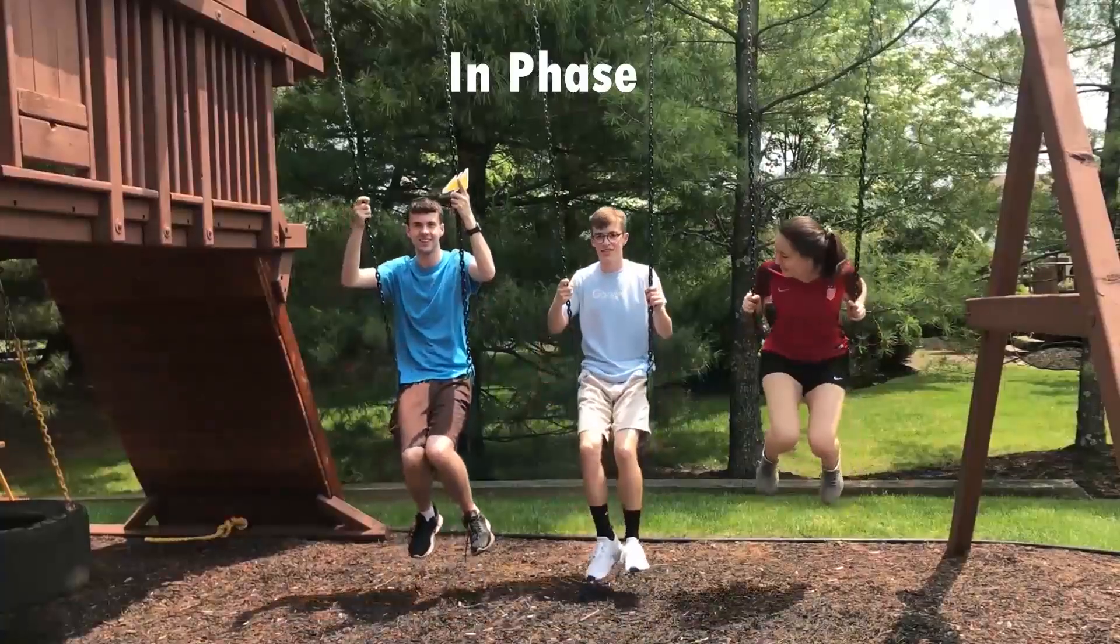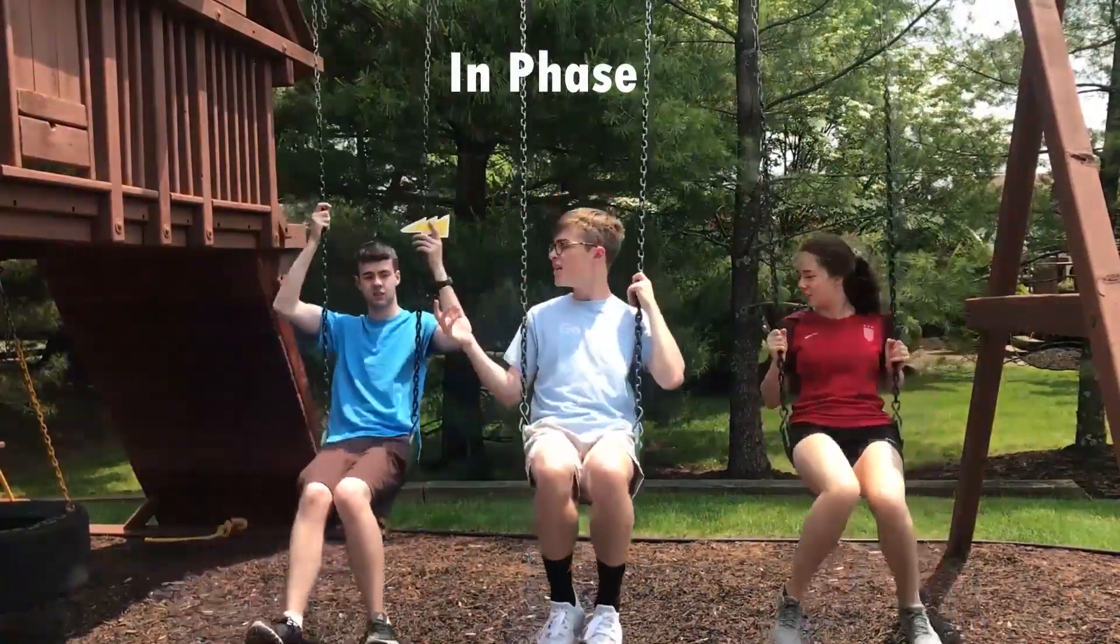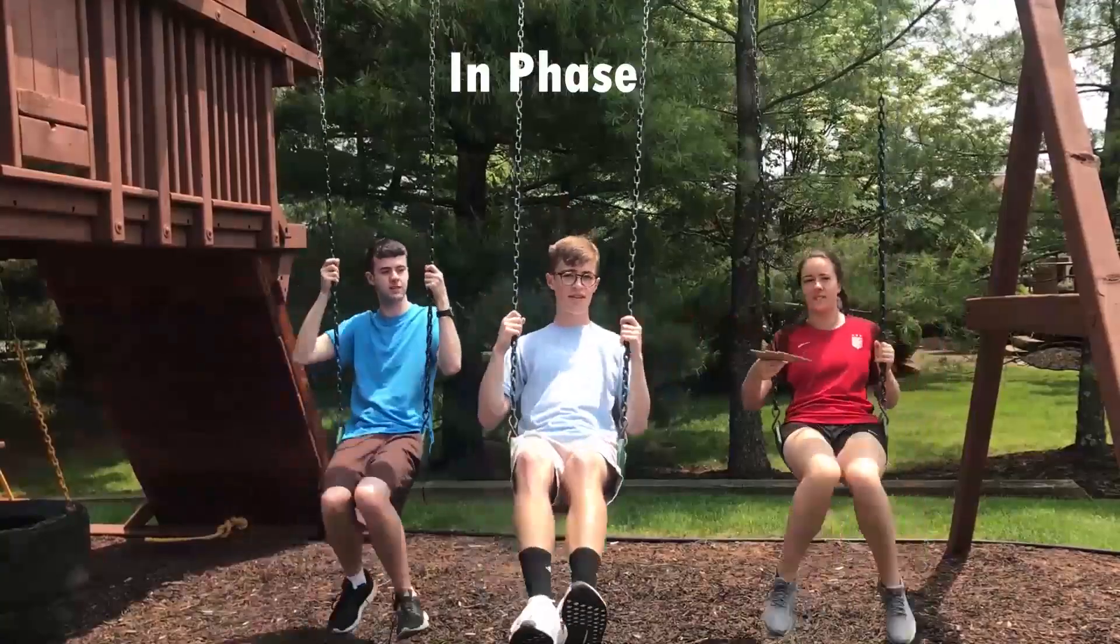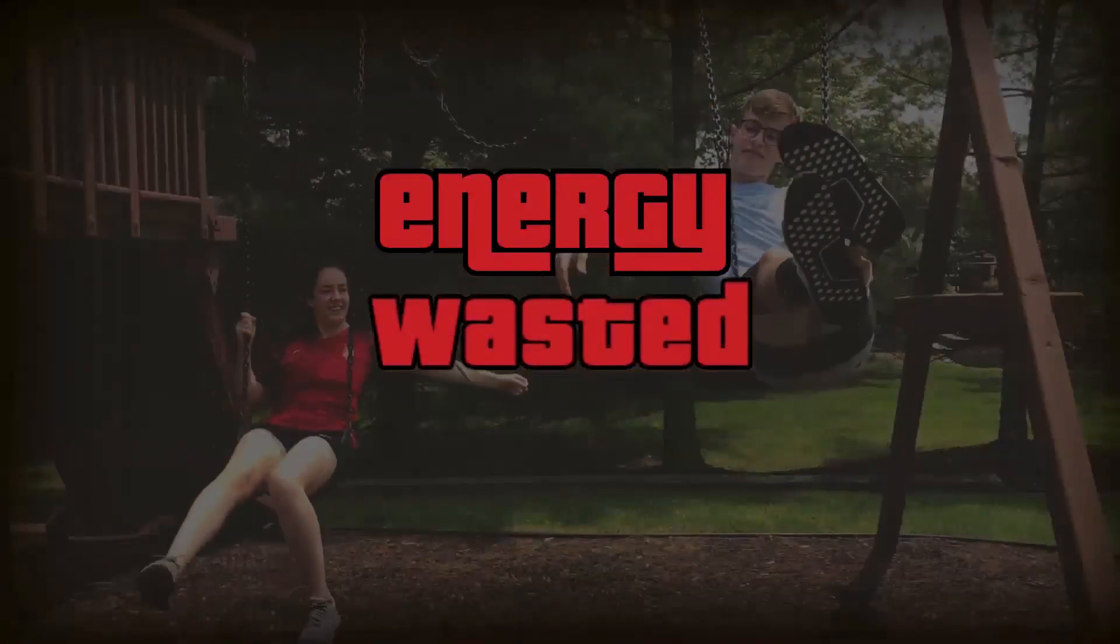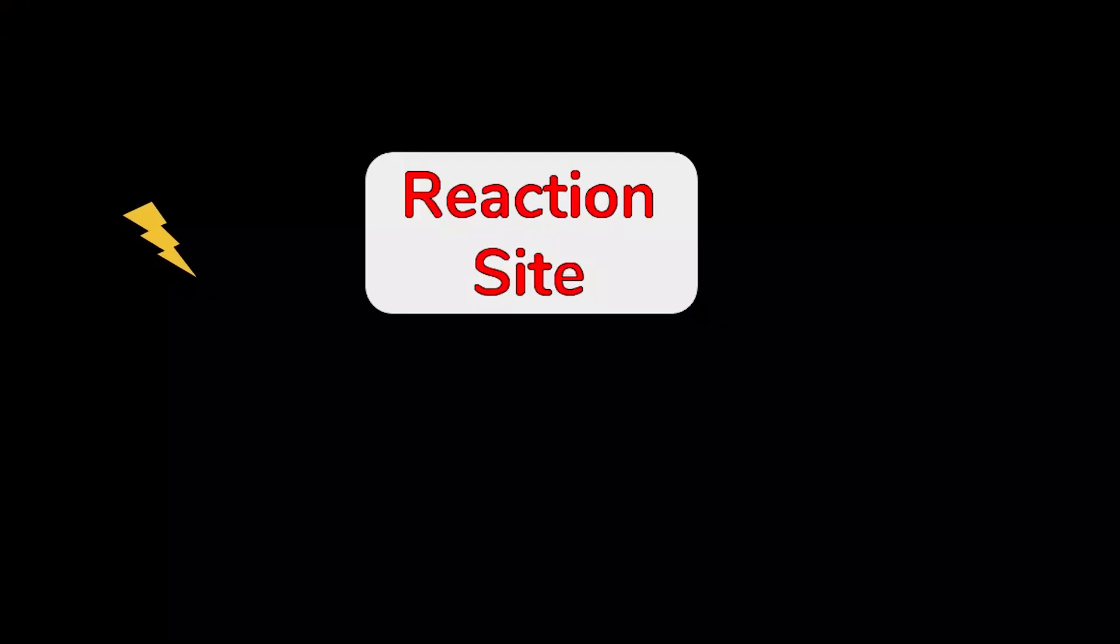Say for example you're on the swings with someone else. This quantum coherence is like how it's substantially easier to hand someone something when you're swinging in phase with them, rather than when not in phase. This is how energy is able to smoothly make its way towards the reaction site of the chloroplast.